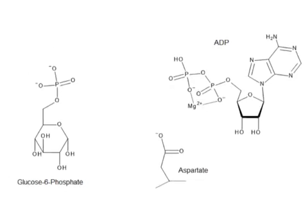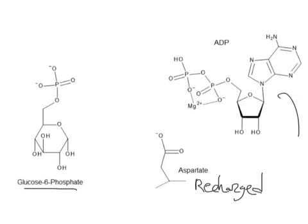Now we are ready to go again. We have a glucose-6-phosphate, which is going to go on in glycolysis, a recharged aspartic acid ready to act again, and ADP which is going to be released. And we're ready to go again — that's hexokinase.